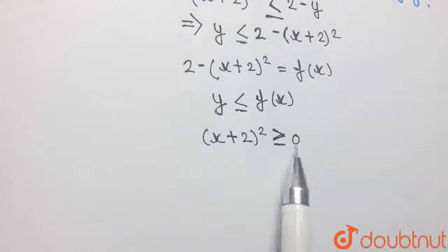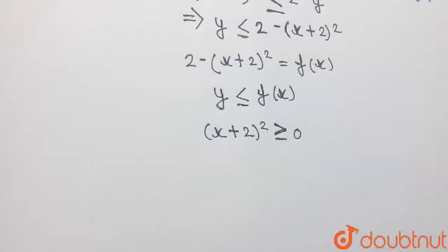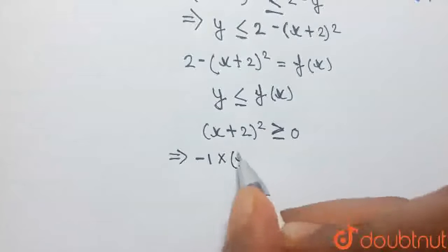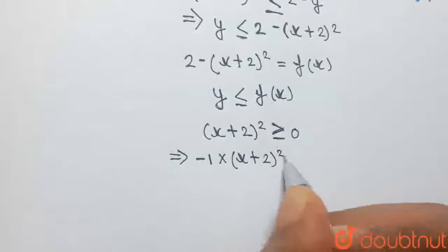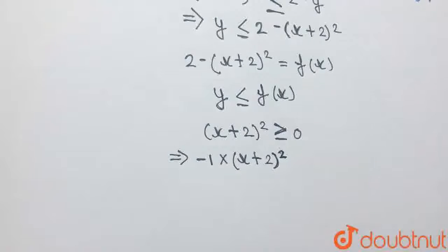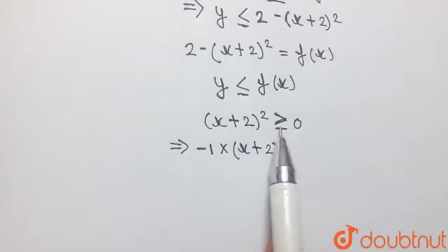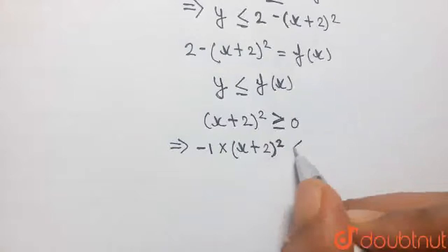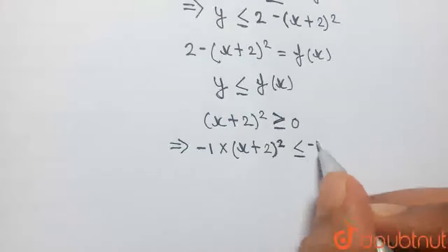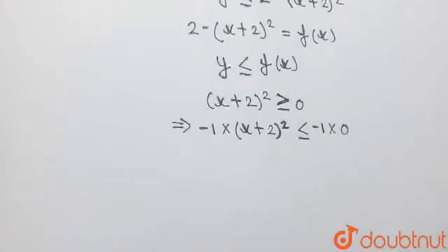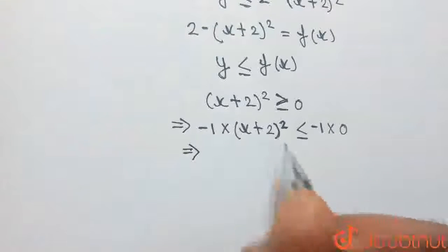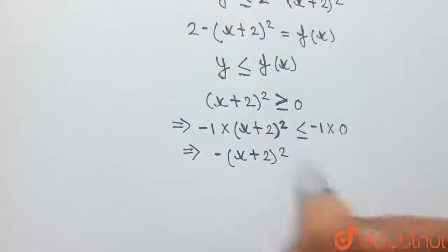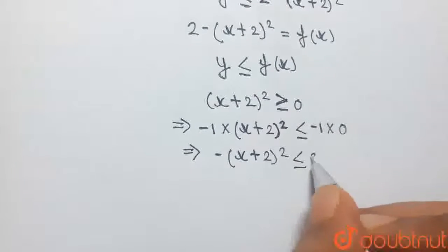Multiplying both sides of this inequation by minus 1: since we are multiplying by a negative number, the inequality will reverse — greater than or equal to becomes less than or equal to. So we get −(x + 2)² ≤ 0.